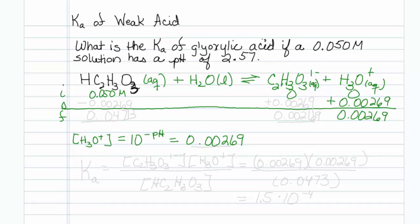The stoichiometry is one to one, so I know the change for the conjugate base is also plus 0.00269, and the change for the acid is minus 0.00269. I'll do my accounting and finish the table — the equilibrium concentration of the acid is 0.0473.